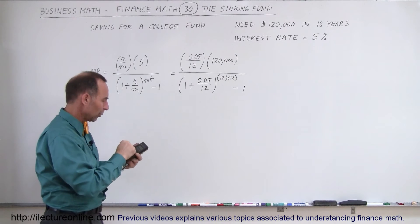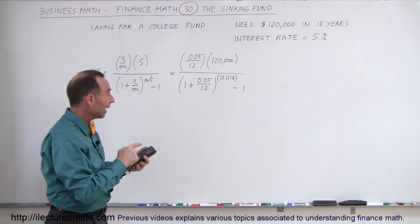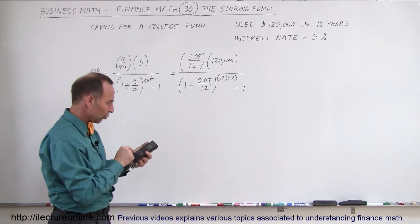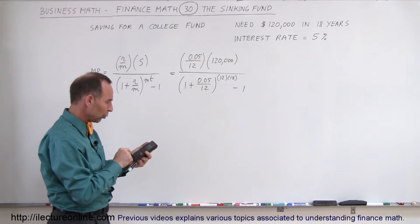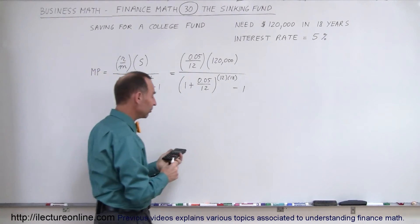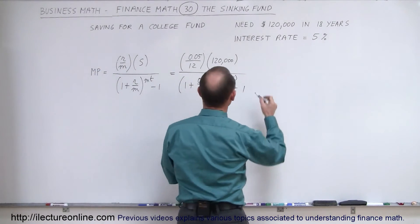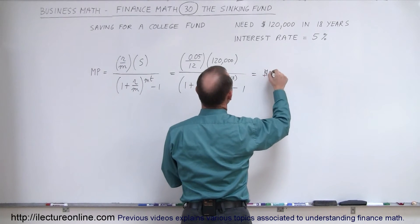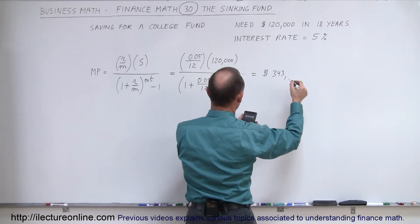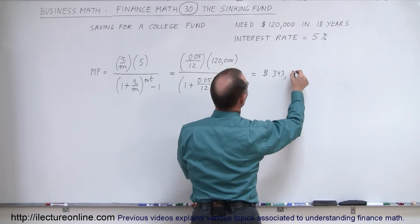We take the inverse of that by hitting the 1 over x button, and then we multiply it times 0.05 divided by 12 and times $120,000. And that means that we have to have monthly payments for the next 18 years, going to the bank, equivalent to $343.64.